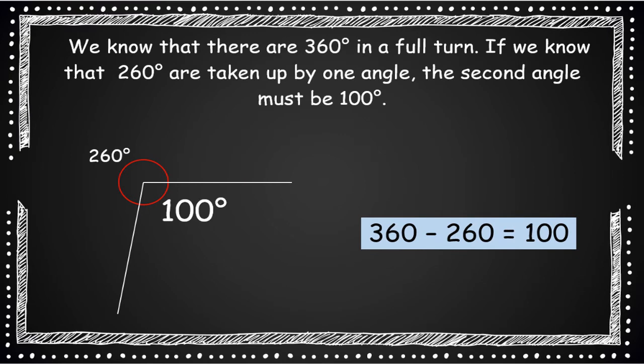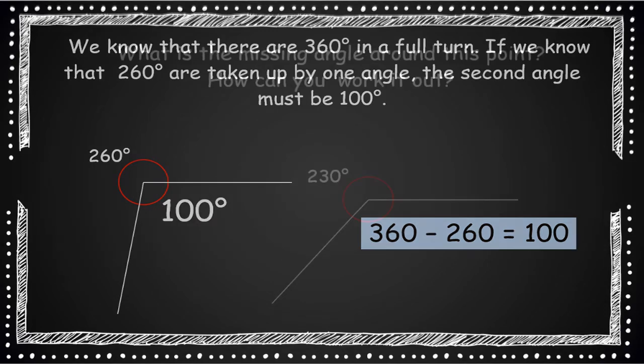How did you get on? So we know that there's 360 degrees in a full turn, in a circle. And if 260 degrees are taken up by one angle, the second angle must be 100 degrees.